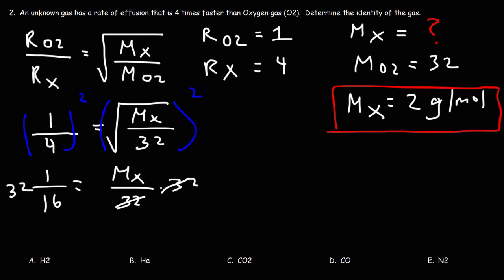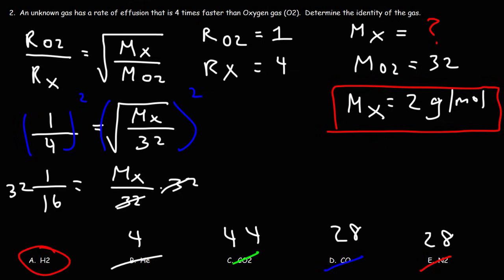Which answer choice has a molar mass of 2? It's not N2, which has a molar mass of 28. It's not carbon monoxide, which also has a molar mass of 28 (12 plus 16). It's not carbon dioxide, with a molar mass of 44. And it's not helium, with a molar mass of 4. The answer is H2 — hydrogen gas has a molar mass of approximately 2, so hydrogen gas is the unknown gas.